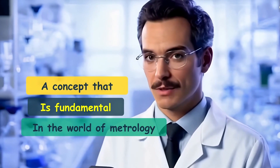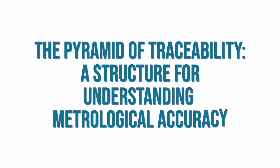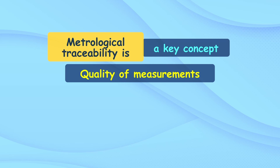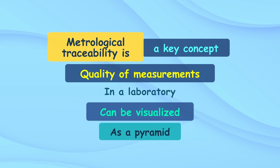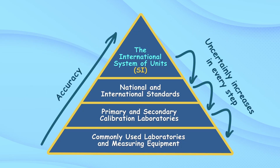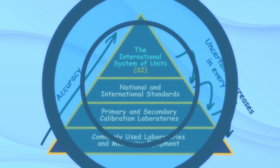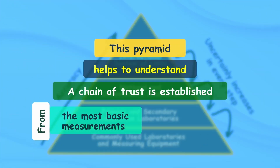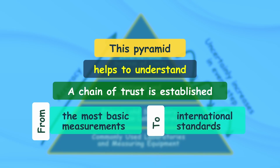Before learning about the requirements of this standard, let's look at a fundamental concept in the world of metrology: the pyramid of traceability. Metrological traceability can be visualized as a pyramid representing the different reference levels and their connection to measurements performed in a laboratory. This pyramid helps to understand how a chain of trust is established from the most basic measurements to international standards.